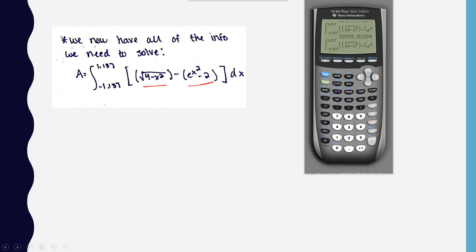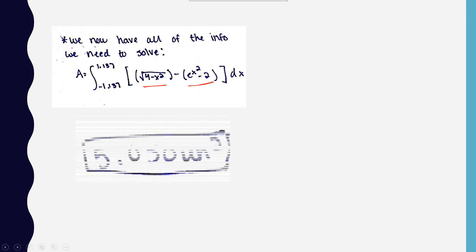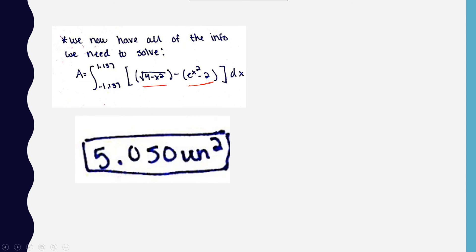When you plug this into a graphing calculator like I've done here and press enter, you should get 5.0495, which rounds to 5.050 units squared. We have units squared because we solved for area.